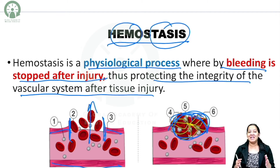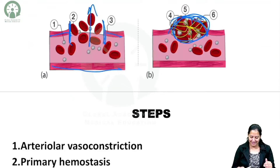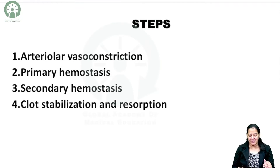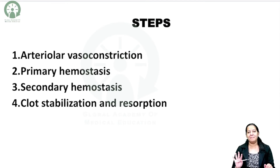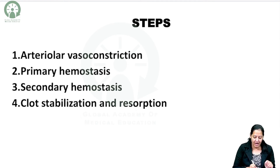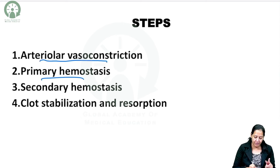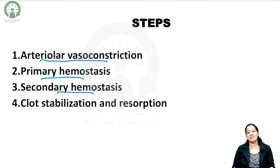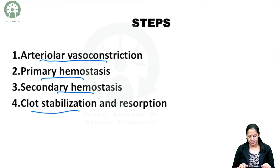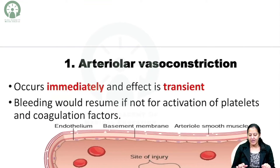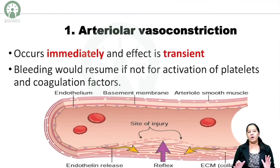Let me tell you the steps of hemostasis. Basically, there are four steps: the first step is arteriolar vasoconstriction, the second step is primary hemostasis, the third step is secondary hemostasis, and the next is clot stabilization and resorption. The first step is arteriolar vasoconstriction.